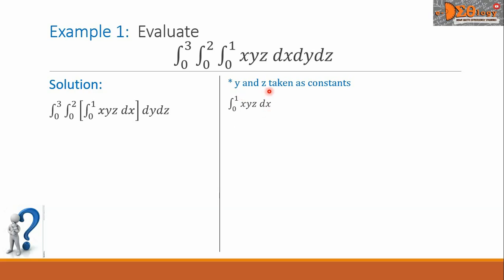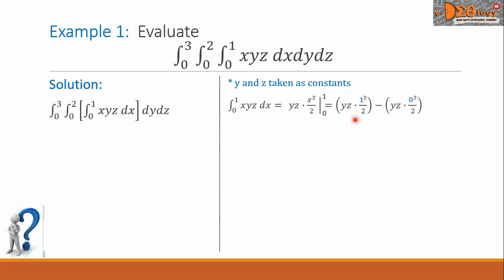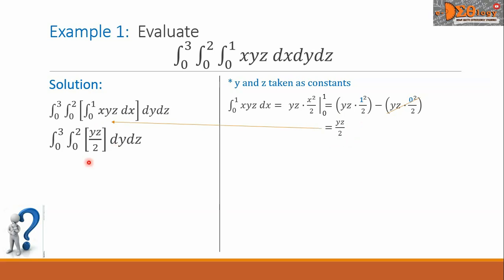It means y and z are taken as constants. The integral now is yz times x squared over 2, to be evaluated from 0 to 1. Substituting the values, we have the first group: yz times 1 squared over 2, minus the second group: yz times 0 squared over 2. In the second group, because of this 0, the second group will be all 0. Let us simplify the first group, and this will be yz over 2. This function now, we are going to substitute in the triple integral, and it will be like this.